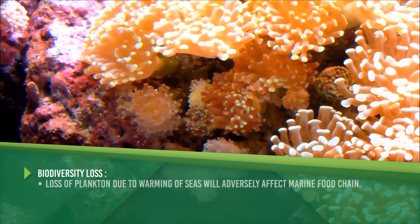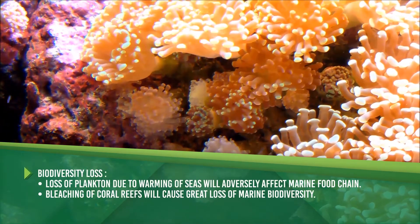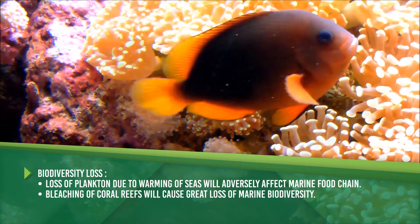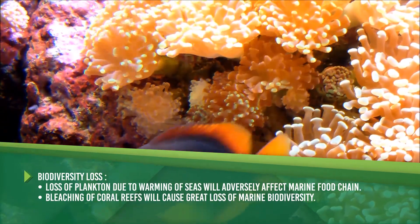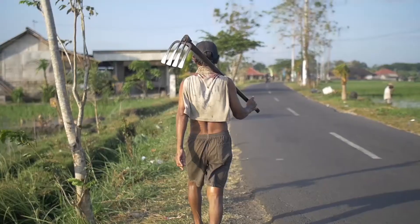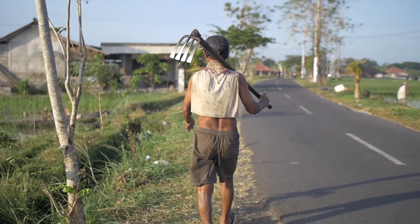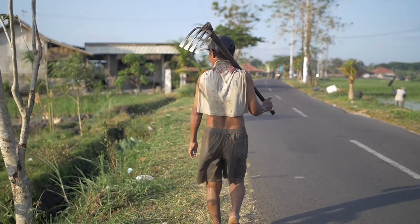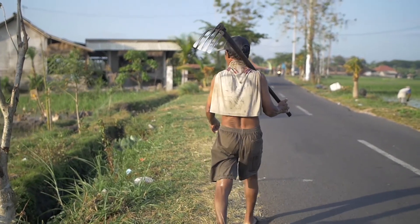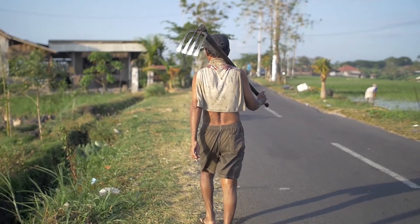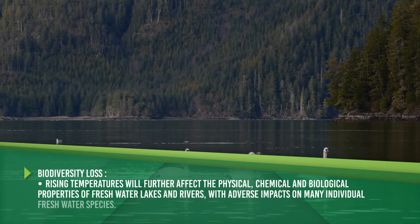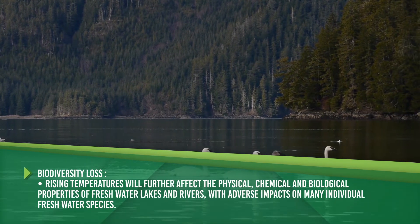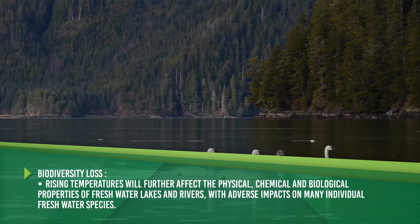Biodiversity loss: the loss of plankton due to the warming of seas will adversely affect the marine food chain. Bleaching of coral reefs will cause great loss of marine biodiversity. Rising temperatures would increase the fertiliser requirement for the same production targets, resulting in higher greenhouse gas emissions, ammonia volatilisation, and cost of crop production. Rising temperatures will further affect the physical, chemical and biological properties of freshwater lakes and rivers, with adverse impact on many individual freshwater species.